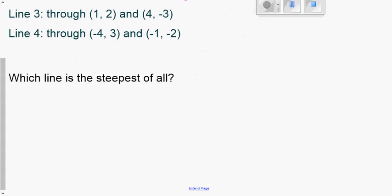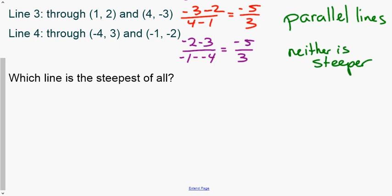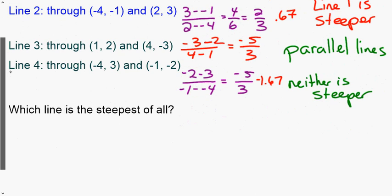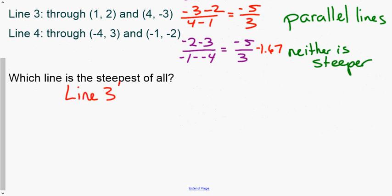For lines three and four: both have a slope of −5/3, so they are parallel. Since they are parallel, we do not compare steepness — neither is steeper. Comparing all four lines: −5/3 ≈ −1.67 in absolute value is greater than 1.5, so lines three and four are steeper than lines one and two.